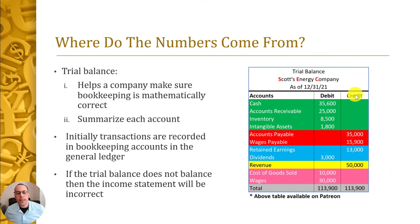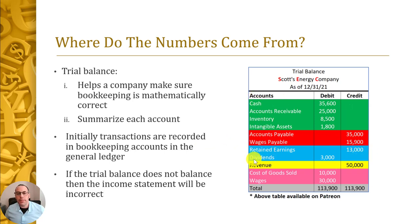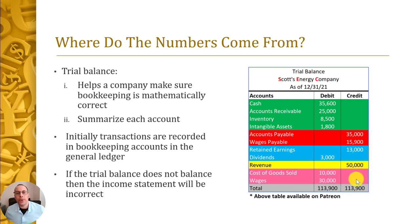Where do the income statement numbers come from? They come from the trial balance. Every transaction is entered into the general ledger, and at the end of a quarter or year, the balance in each account is placed on the trial balance. For Scott's Energy Company, cash at year-end 2021 was $35,600. The trial balance starts with assets, then liabilities, then equity — those go on the balance sheet. The revenue section (one category, $50,000) and expense section ($10,000 + $30,000) feed the income statement, giving net income of $10,000. The sum of debits must equal the sum of credits.